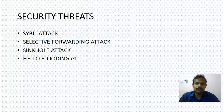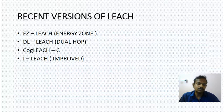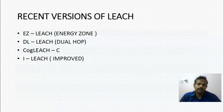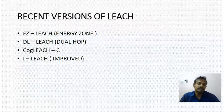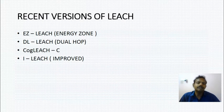Many versions of LEACH have evolved over the years, such as EZ-LEACH (Energy Zone LEACH), DL (Dual Hop), Cognitive LEACH, and Improved LEACH. Finding new routing strategies for cluster-based routing protocols is an interesting research topic. LEACH is one of the basic clustering-based routing protocols and from it we can move in many different research directions. Thanks for watching.